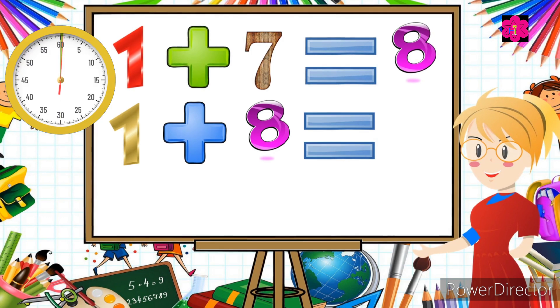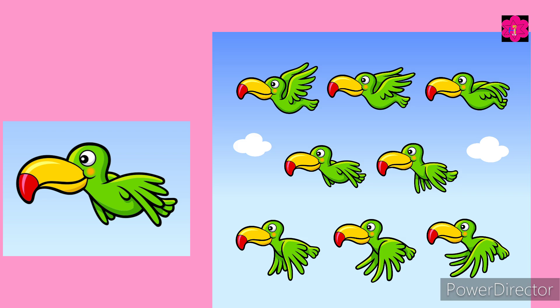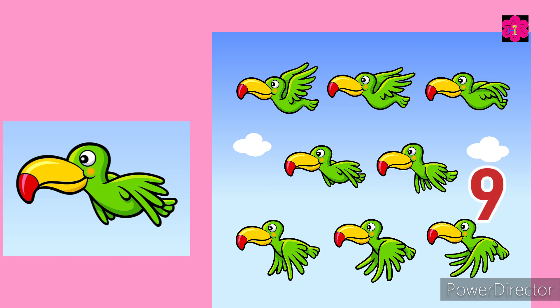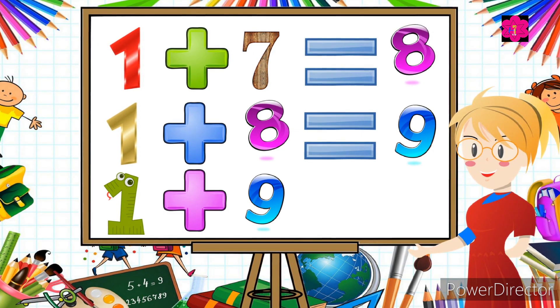Now tell me: one plus eight is equal to...? Here is one bird, now we add eight more birds. Count together: one, two, three, four, five, six, seven, eight, nine. One plus eight is equal to nine. Today's last question: one plus nine is...?